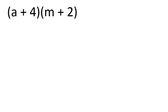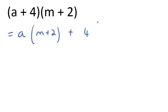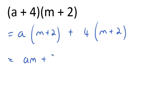One way of looking at this is as two single expansions, so that you have A times the second bracket and 4 times the second bracket. This then gives a single expansion: A times M, A times 2, 4 times M, and 4 times 2.